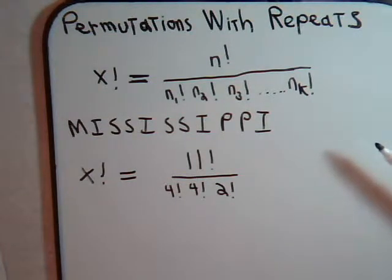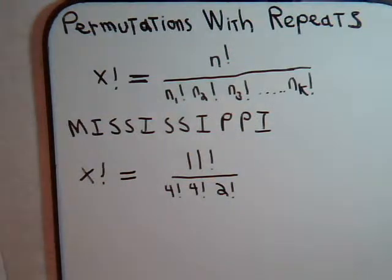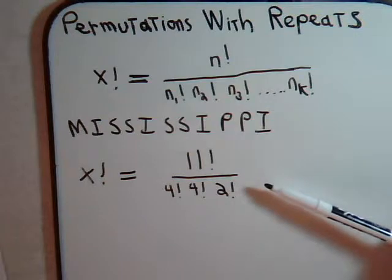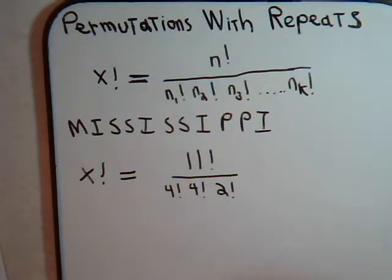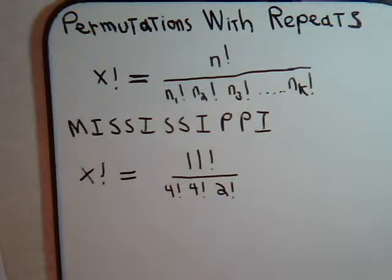How many of these permutations, or how many of these different arrangements, are arranged so that the two letters p's are always separate from each other? So here we know the total number of arrangements, and these arrangements, how many of them have it so that the p's are never side by side. They're always separated.